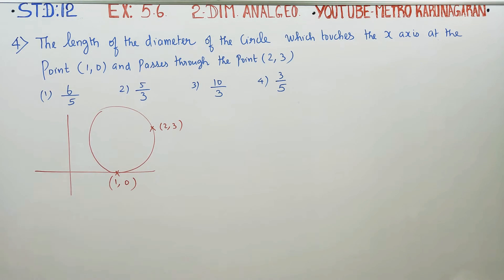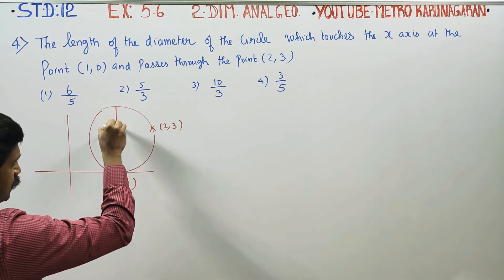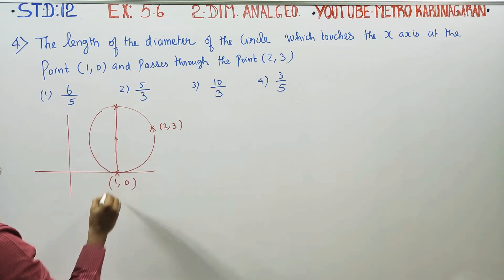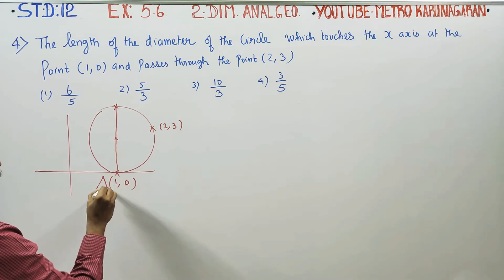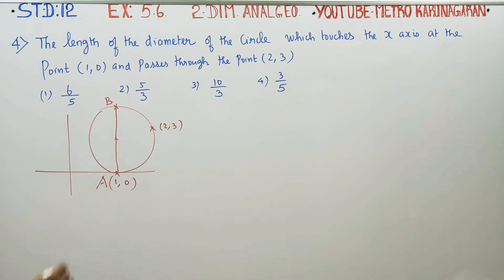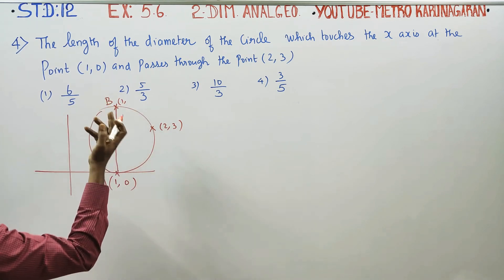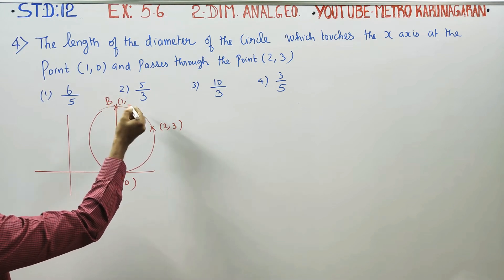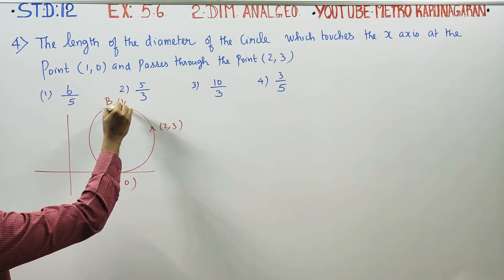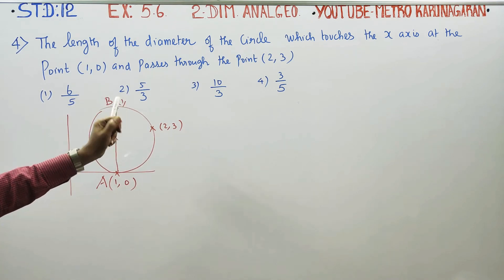So (2,3) is a point on the circle. We need to find the length of the diameter. The center lies directly opposite, so we can find the diameter using two endpoints A and B. Since the circle touches the x-axis at (1,0), the x-coordinate of the center is 1, but the y-coordinate is unknown. So let's call it y and find the length of the diameter.